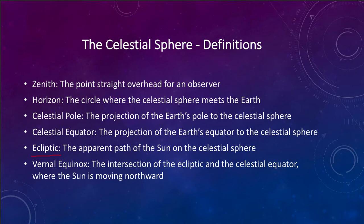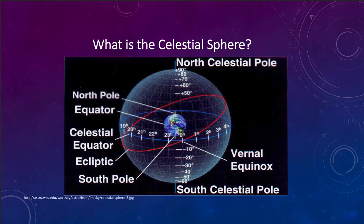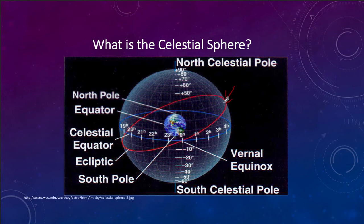One of the positions the sun reaches is what we call the vernal equinox. The vernal equinox is where the sun is on the first day of spring — when it crosses the celestial equator heading north. It will cross it again in the fall heading south. The ecliptic is the red line here, and notice how it's tilted relative to the celestial equator — that is because of the tilt of the Earth's axis. The vernal equinox is just that point where the ecliptic and the celestial equator meet.